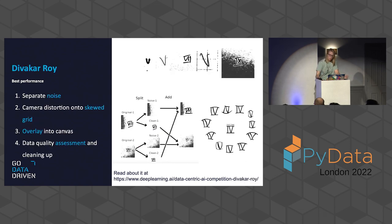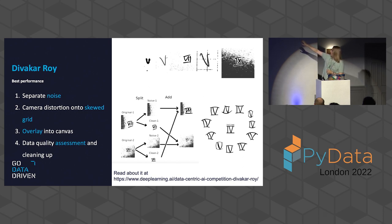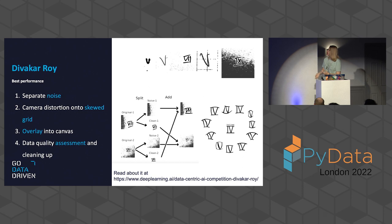Divacar Roy's first-place approach focused on a completely different aspect: they noticed many different types of noise in the dataset. They separated the noise from the actual number, then created new samples to have all noise types represented for all classes across the dataset. They used data augmentation on individual numbers and overlaid them on a noise canvas, pairing different noise versions with different number versions. This won them the competition.